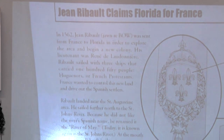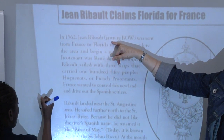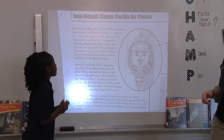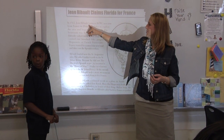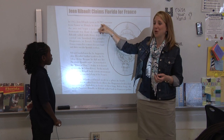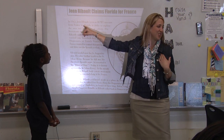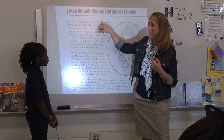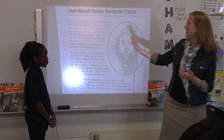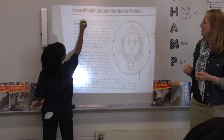Mayanna begins reading: 'In 1562, Jean—' Let's pause. The article helps us pronounce his name in French. So we have this J — 'Jean' — and in French pronunciation it's Jean Ribault. When we see it on signs or listed for the school, the actual French pronunciation is Jean Ribault. As we read the article, we're going to use his actual name.